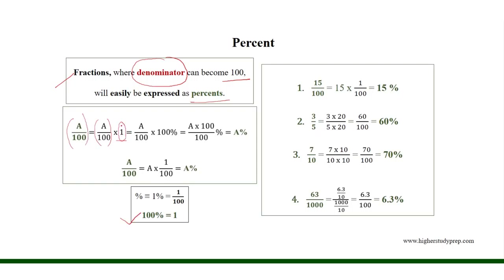Since 1 equals 100%, therefore A over 100 times 100% results in A%. So we can write that A over 100 equals A times 1 over 100, which equals A%, where 1 over 100 is equivalent to 1%.